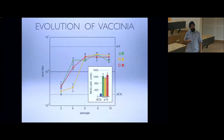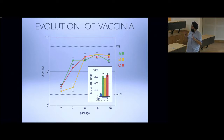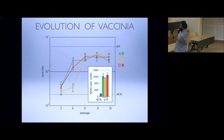Here's virus titer — this is actual viral fitness, not a proxy. This is wild-type vaccinia virus, which has an E3L gene quite good at suppressing PKR. When you delete E3L, you drop from that high level to very low. And quite amazingly, by passage 6 the virus had already basically recovered most of the fitness it had lost.